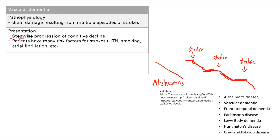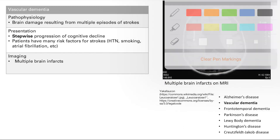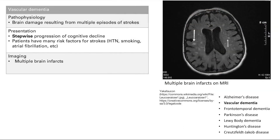With vascular dementia patients, you obviously see risk factors for strokes: hypertension, smoking, atrial fibrillation, et cetera. On imaging, it makes sense that you would see multiple strokes. You can see with these arrows that there are multiple lesions — all these white lesions representing multiple strokes that cause this stepwise dementia.